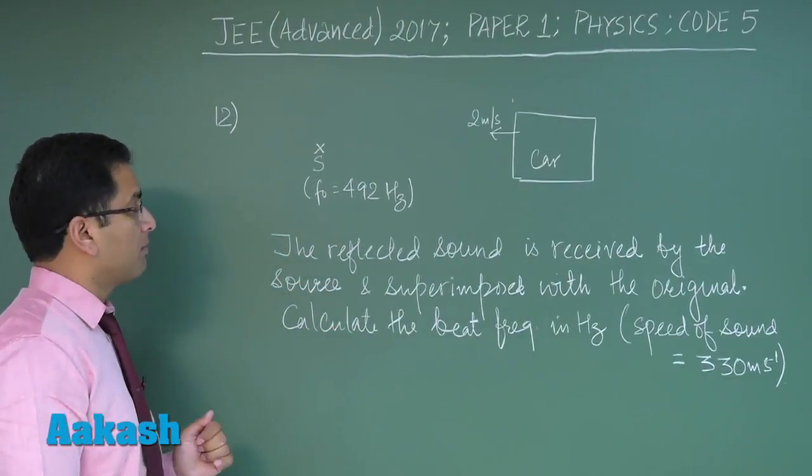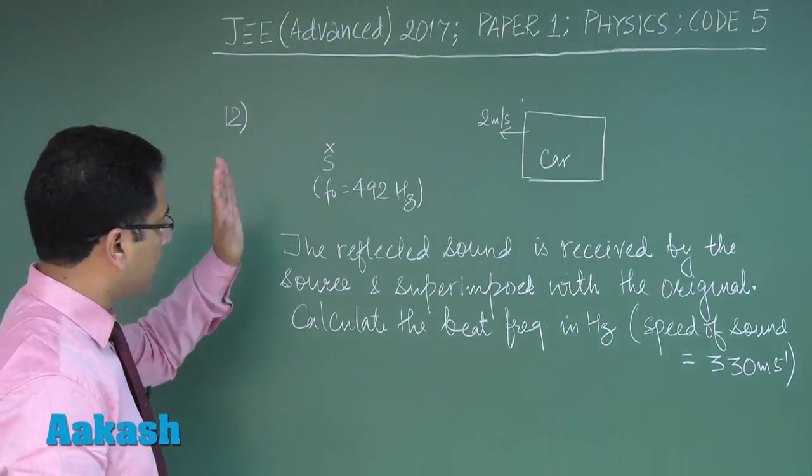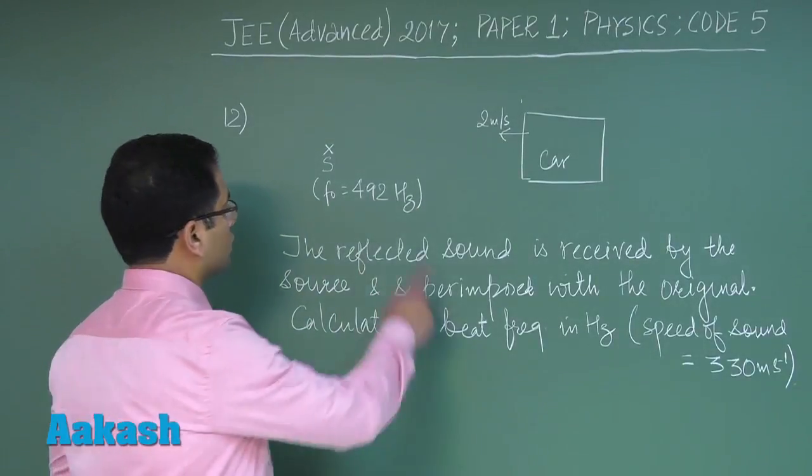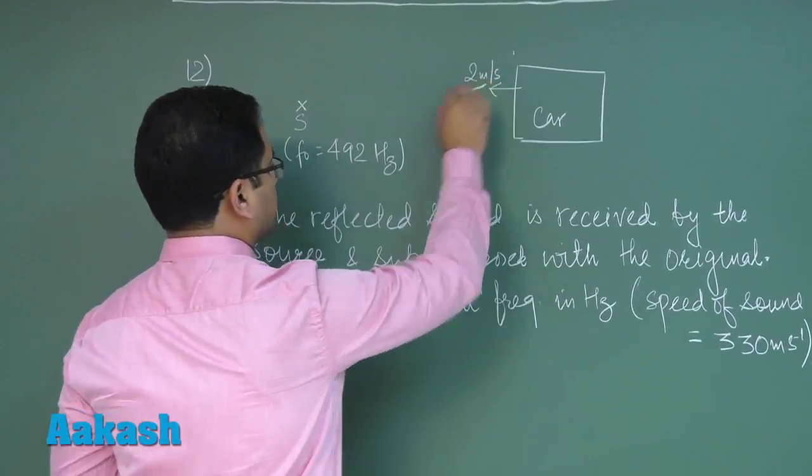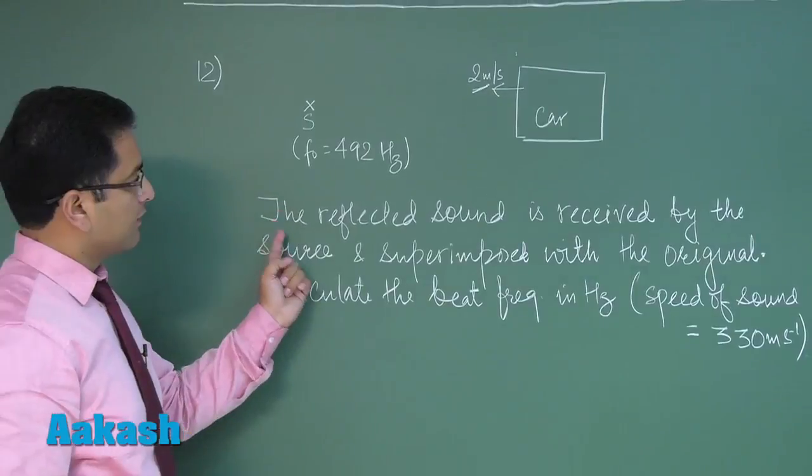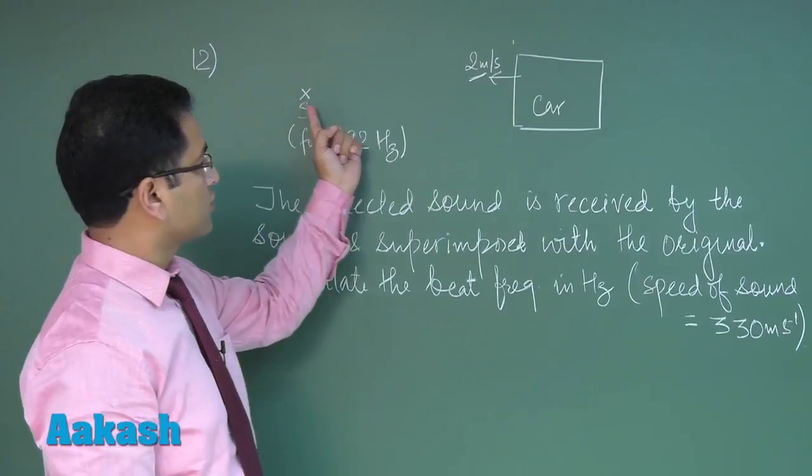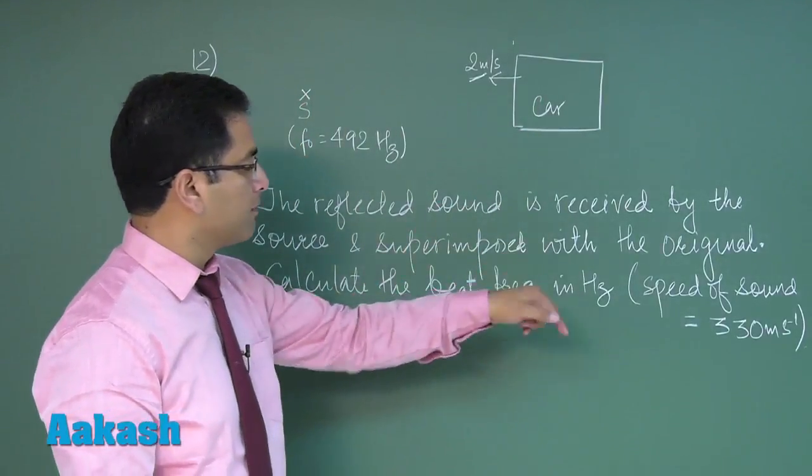It's from the topic of Doppler effect. There's a stationary source that emits a frequency of 492 hertz. The source is being approached by a car moving with a speed of 2 meters per second, and the reflected sound is received by the source and gets reflected and superimposed.